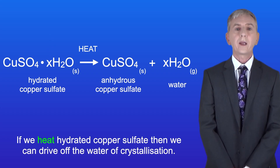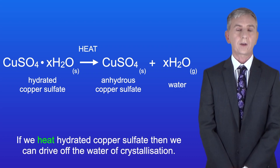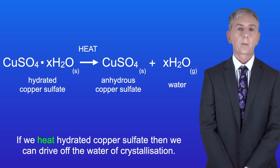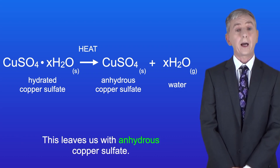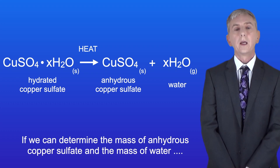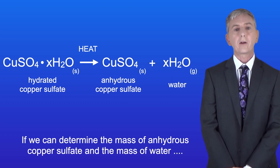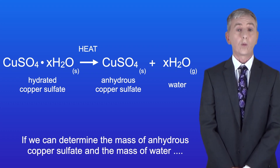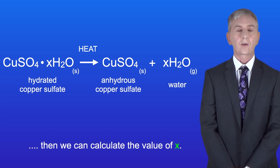If we heat hydrated copper sulfate then we can drive off the water of crystallization. This leaves us with anhydrous copper sulfate. If we can determine the mass of anhydrous copper sulfate and the mass of water, then we can calculate the value of x.